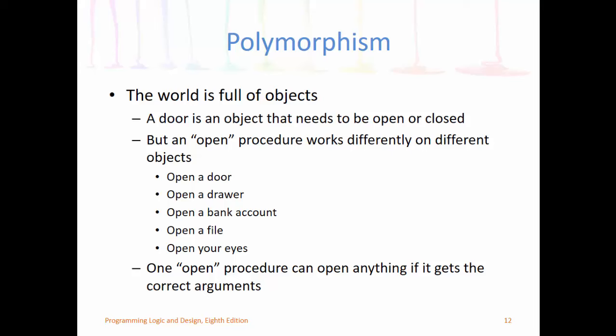And finally, polymorphism. If you think of everything as an object, the door is an object that needs to be opened or closed. But that open method works differently on a door than it does on a drawer, a bank account, a file, or your eyes. So polymorphism, which literally means many forms, is the idea that every object has functions or methods, and one open procedure can react differently to different types of objects.